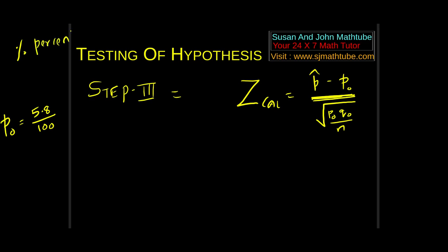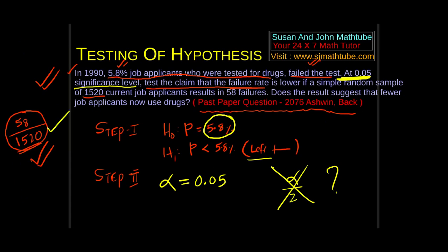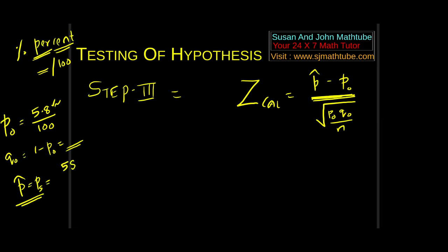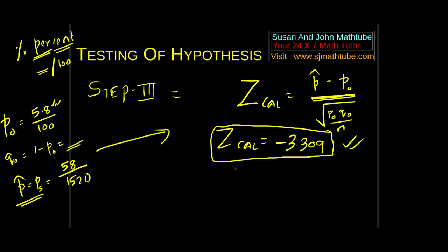Step number 3. The step number 3 is very easy. In the last problem I told you, P cap minus P0, what is P0? The right hand side of H0, root under P0 Q0 by N. P0 is 5.8 out of 100. Remember, per cent. Cent stands for 100. That means, they are measuring out of 100. It is basically 5.8 out of 100. Q0 is equal to 1 minus P0, and P cap or PS stands for the sample proportion, and the sample proportion is given to be 58 by 1520. You plug in all these values. I got Z calculated is equal to minus 3.309. Cross check this value.